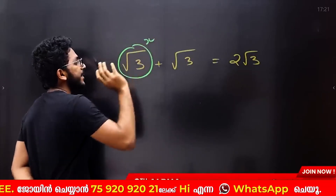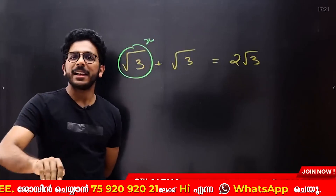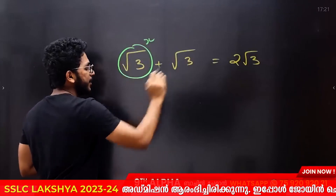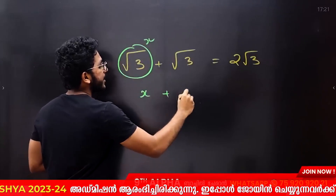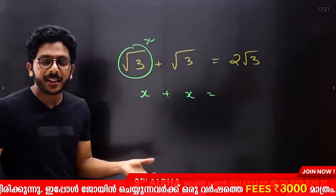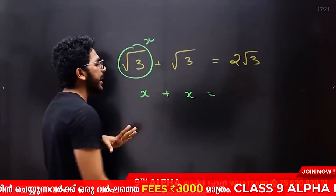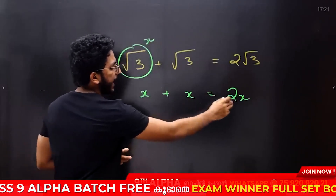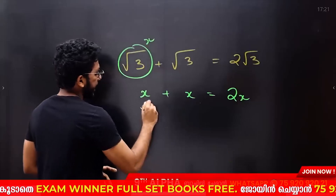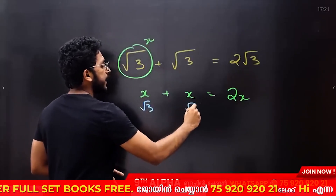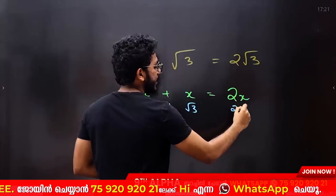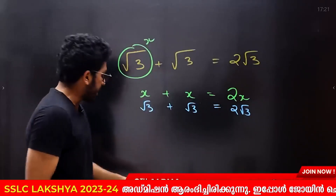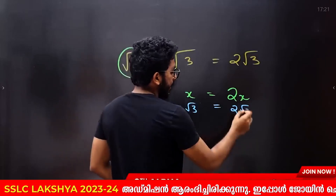To do x and root 3: put x into x. x plus x gives you 2x. If x is equal to root 3, then x is equal to root 3. So 2x is equal to 2 root 3.